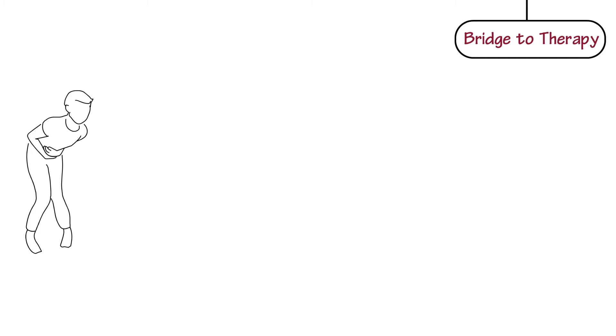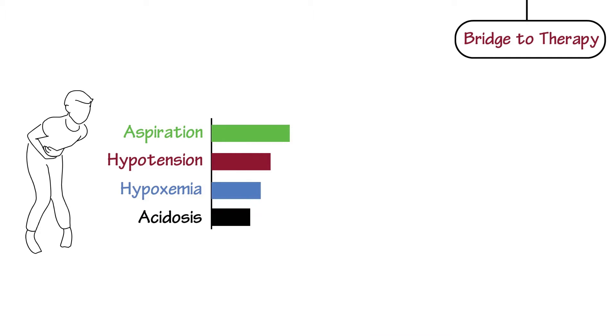You would screen for other medical problems and address the pressing ones first. The risks to intubating a healthy patient are incredibly low. If you were to rank them, you might say the biggest risk is aspiration. Second might be hypotension, then hypoxia, then acidosis. To minimize the risk of major aspiration, you make the patient NPO. And if the patient did eat, you might perform something called rapid sequence intubation.